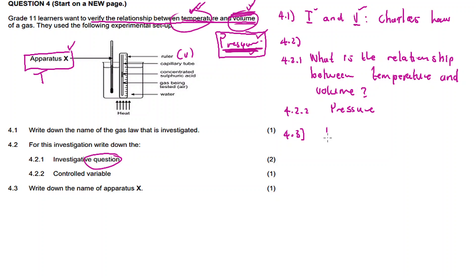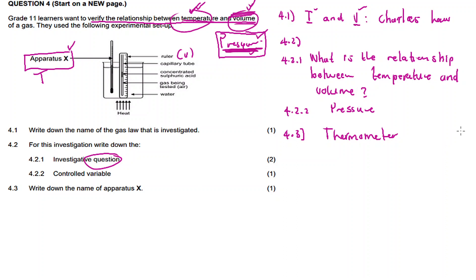Question 4.3: Write down the name of apparatus X. Apparatus X is used for measuring temperature, so therefore it is the thermometer. The thermometer is the instrument used to measure temperature.